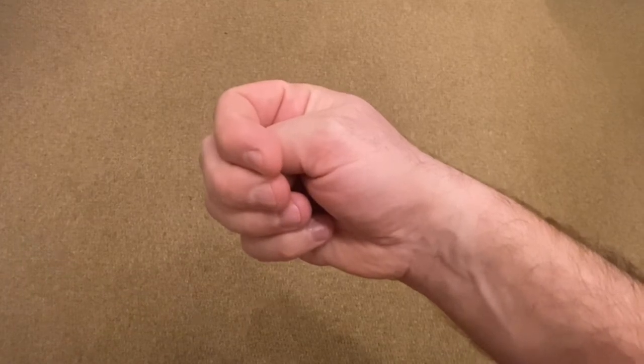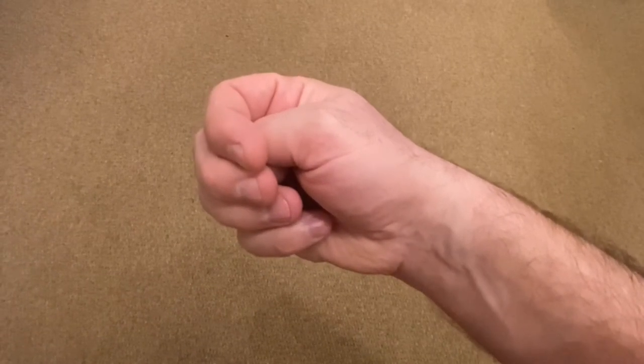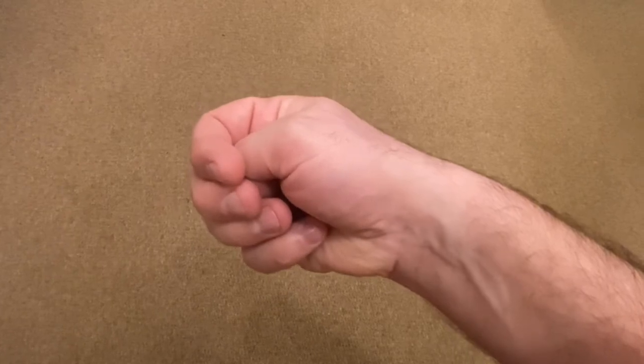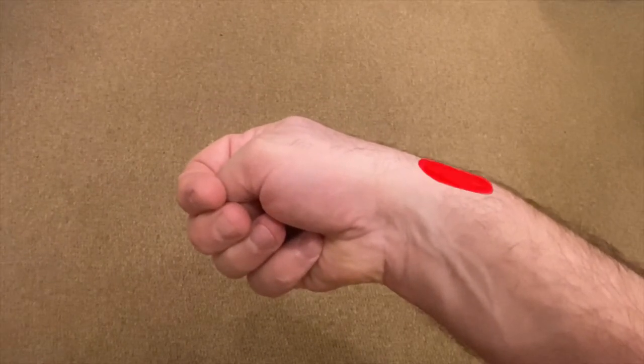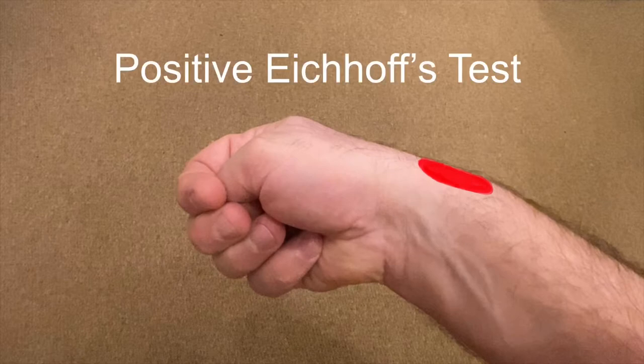But otherwise, just gently angle your wrist downwards and that should produce pain over the thumb side of your wrist right there. That will be a positive Eikhoff's test.